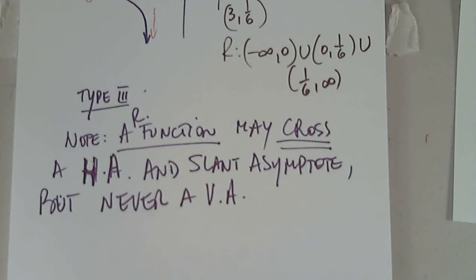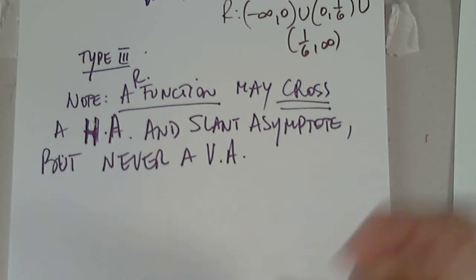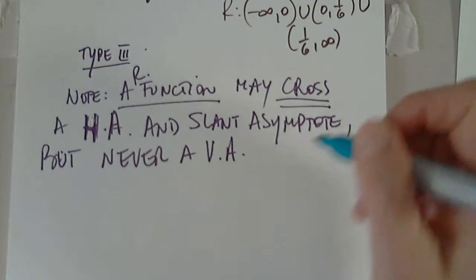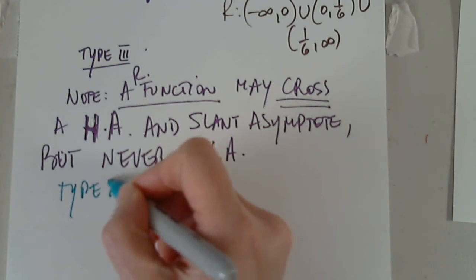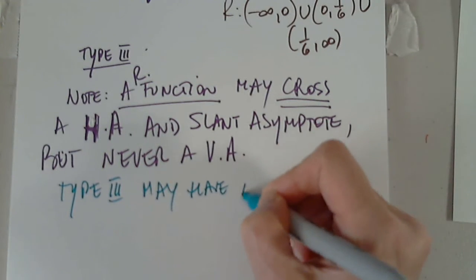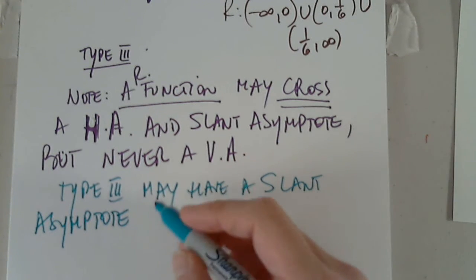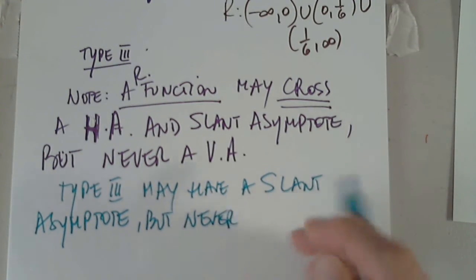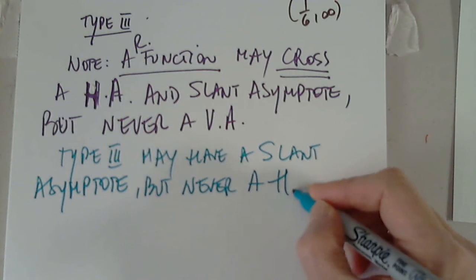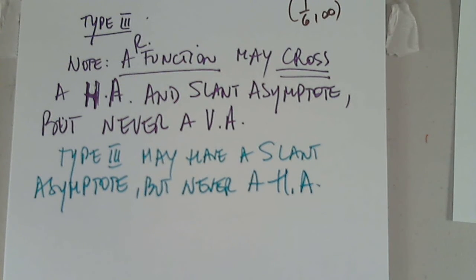Okay. What's the deal with a slant? A function like this one, type 3, may have a slant asymptote. Instead of, so type 3 may have a slant asymptote, but never, ever, a horizontal asymptote. Never, ever. Does it have to have a slant? Let me think if all of them have a slant. Probably yes. But they will never have a horizontal asymptote.